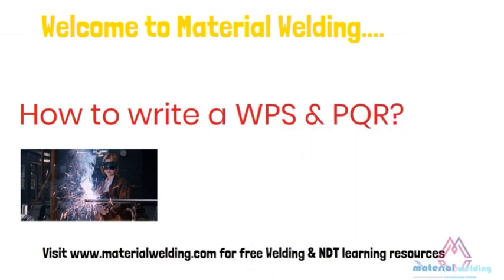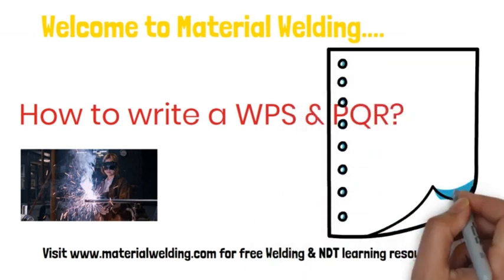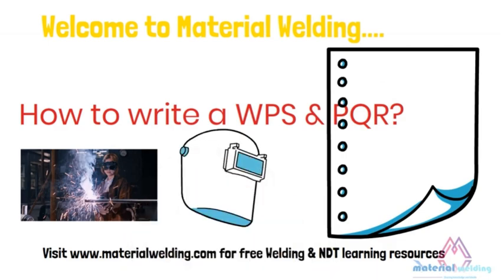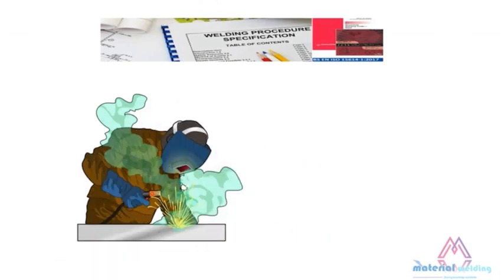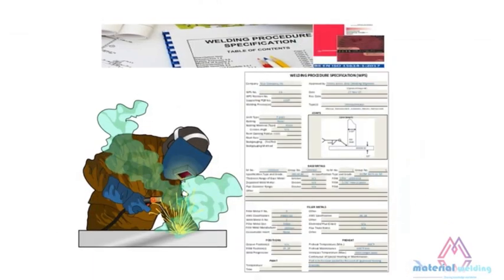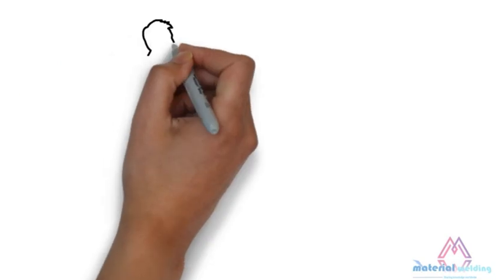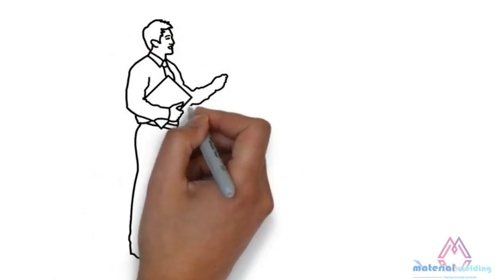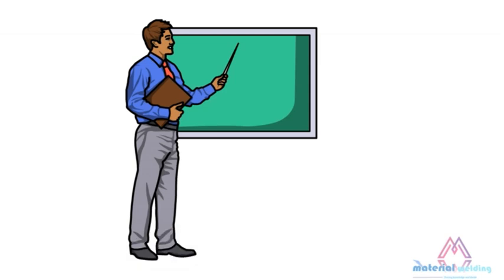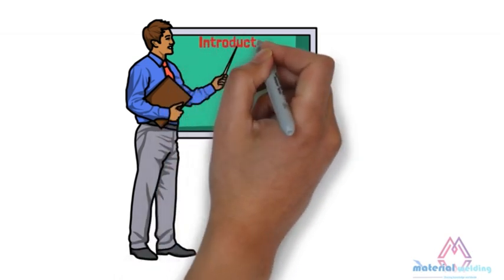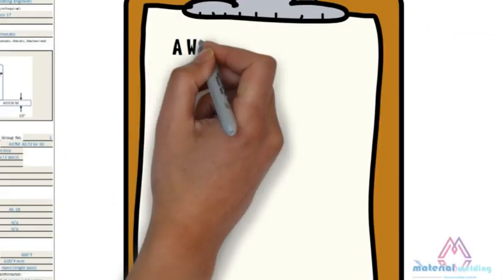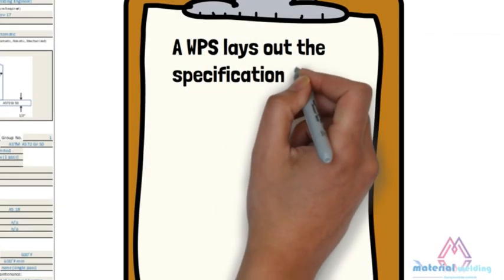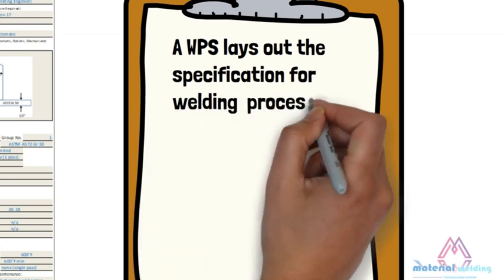The creation of a sound weld will require various materials, an experienced welder, heat, and welding equipment. An inspection of all of this begins with a document known as WPS, or Welding Procedure Specification. A WPS lays out the specification for the welding process to ensure that the resulting weld meets the existing code and standard requirements.